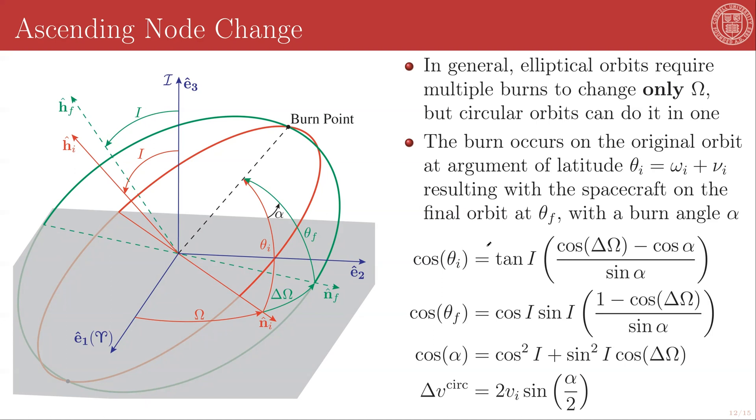So the way that this is parametrized is that the burn occurs on the original orbit at an argument of latitude. You'll recall this quantity theta, which is the sum of the argument of periapsis and the true anomaly. So the burn occurs at theta sub i, and it will result on the spacecraft being on its final orbit at theta sub f with a burn angle, the angle between these two spherical arcs of alpha.